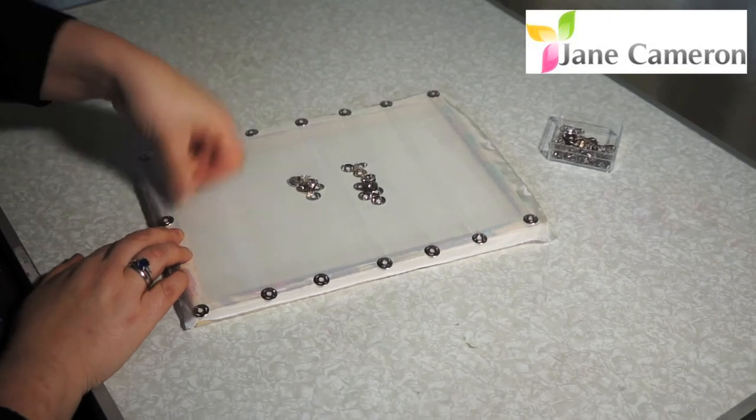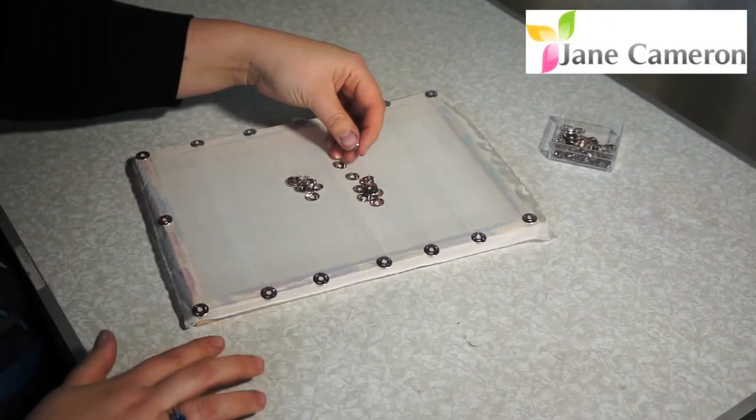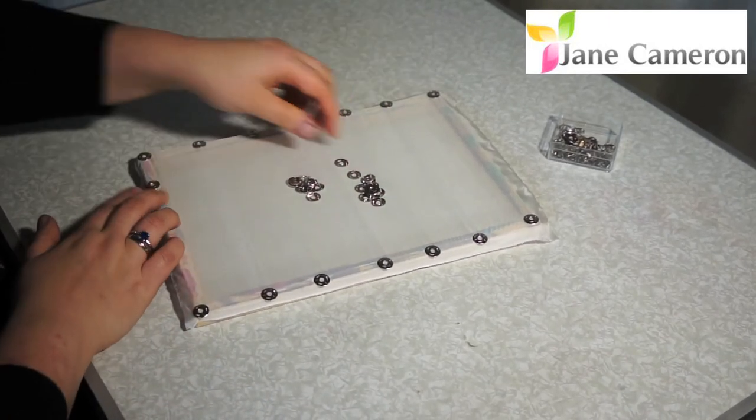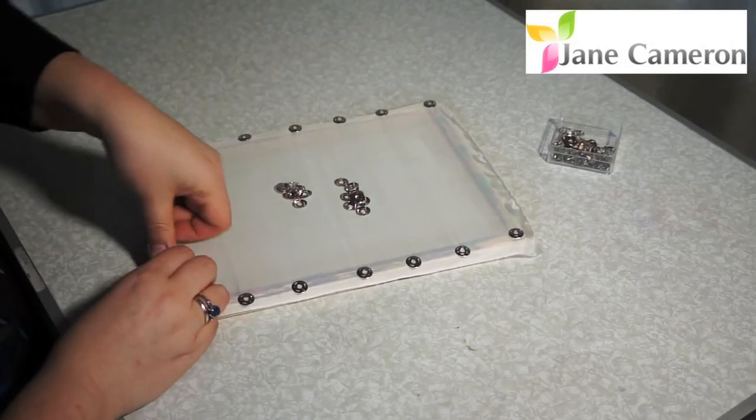So again, pull and press. Make sure that this is even across there, and then you're going to pull and press. We'll just put one on each side here and rotate.